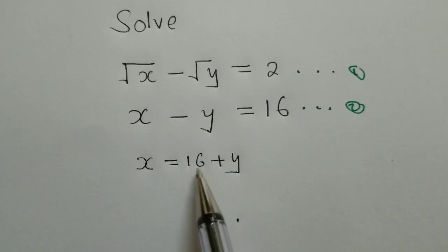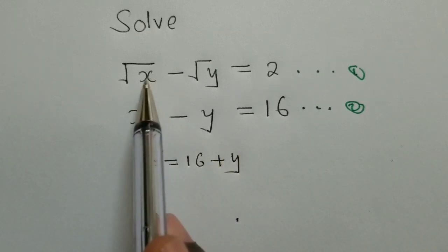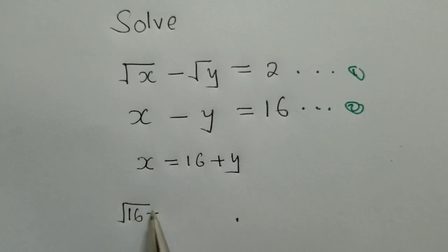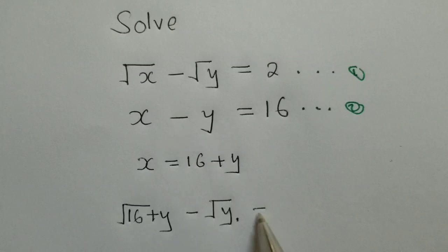After so, we now substitute this equation into equation 1. So we shall have square root of 16 plus y minus square root of y is equal to 2.